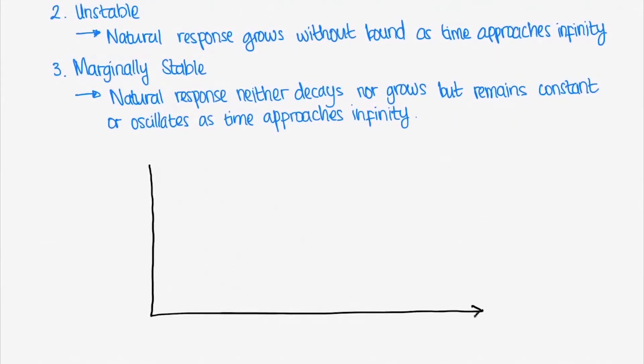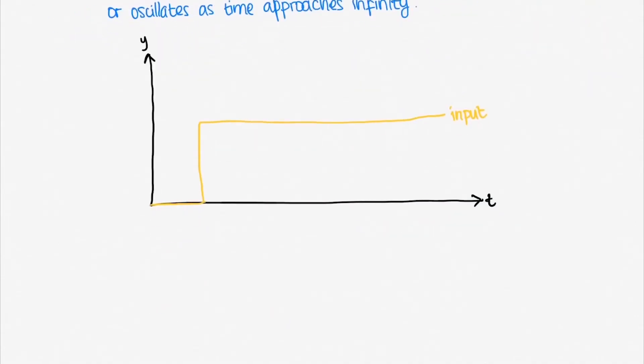To make things clear, let's draw a graph as a function of time. The response of a stable system will converge to a certain value. It does not necessarily converge to our desired output, it just needs to converge to a certain value.